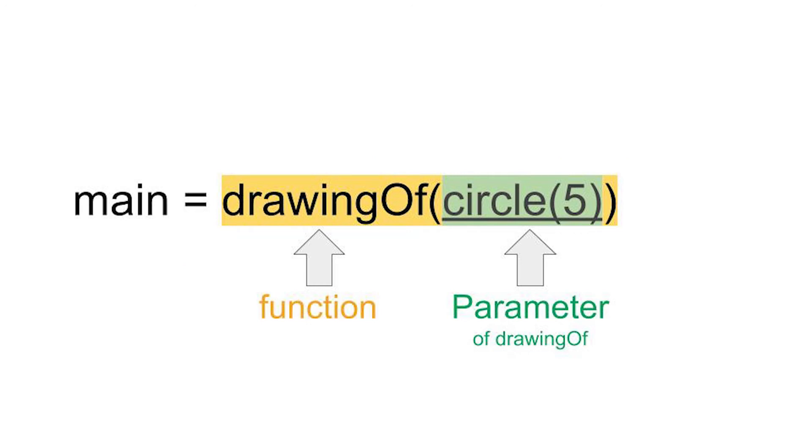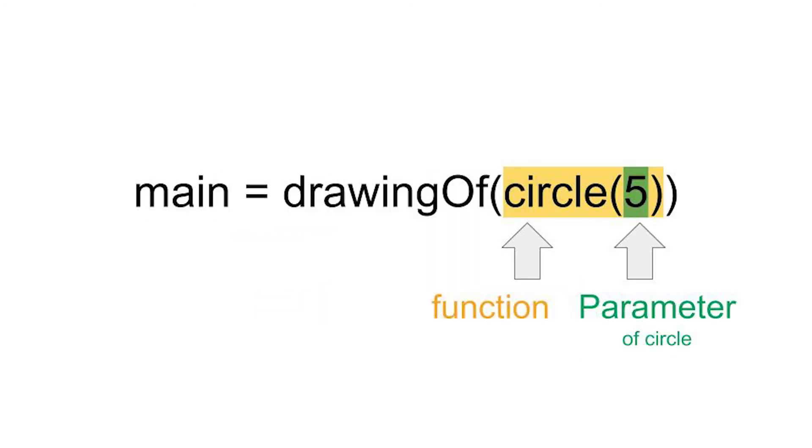If you notice in this example, drawing of is a function and circle 5 is the parameter. So the machine makes drawings of something. And the circle 5 is the parameter, which tells it what the drawing is of. But if you look at this another way, circle is also a function, like a machine that draws circles. And 5 is the parameter that tells the circle function how big to make the circle. So the word circle serves both as a parameter and a function. And this is called nesting.